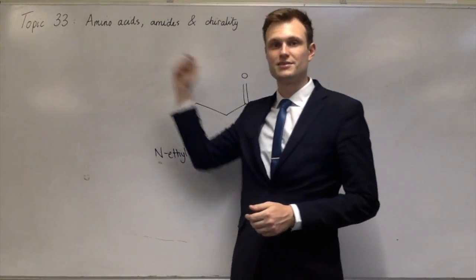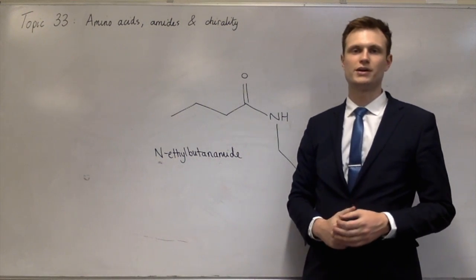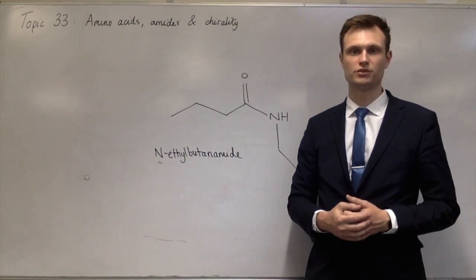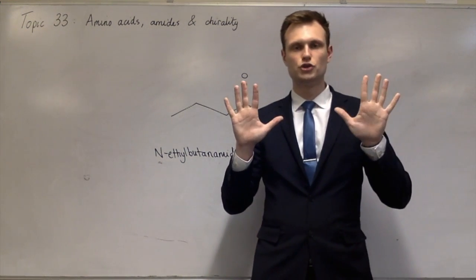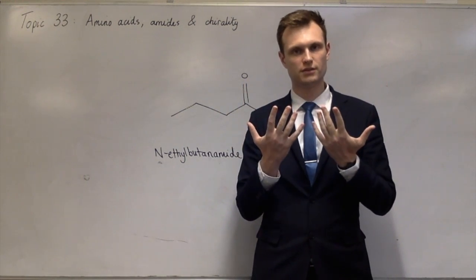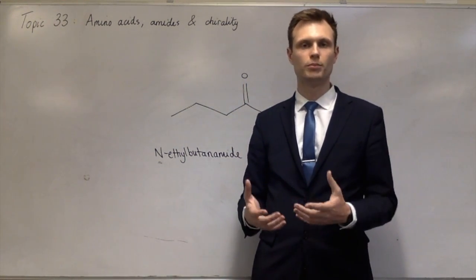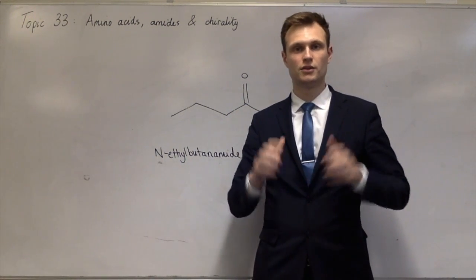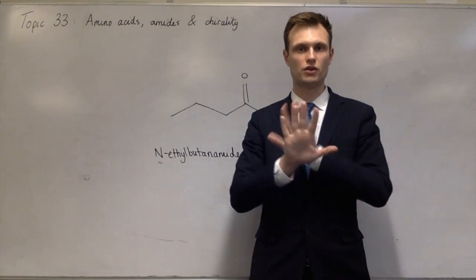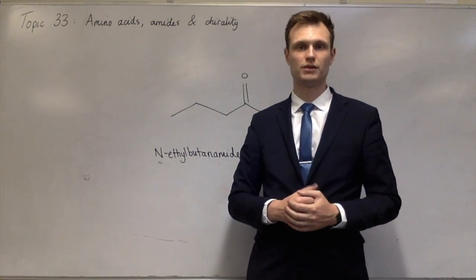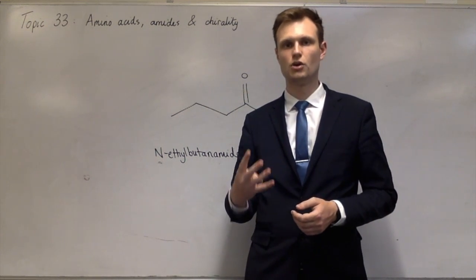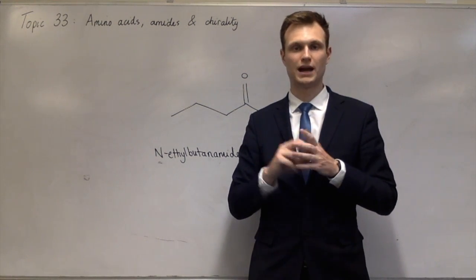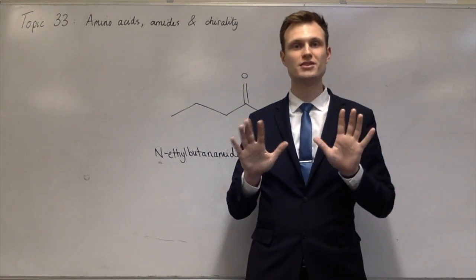So that is amino acids and amides. What we've got left to talk about is chirality. I've come across this slightly before — we've talked about optical isomerism. Optical isomers are non-superimposable mirror images of each other. That happens in octahedral complex ions with three bidentate ligands, where they can be arranged in two different ways which are mirror images but not the same. That can also happen with carbon compounds: if you have four different groups all attached to the same carbon, those groups can be arranged in two different ways that are mirror images of each other.